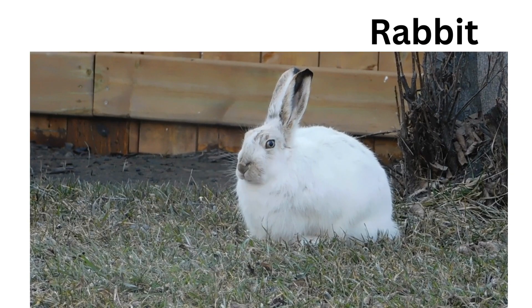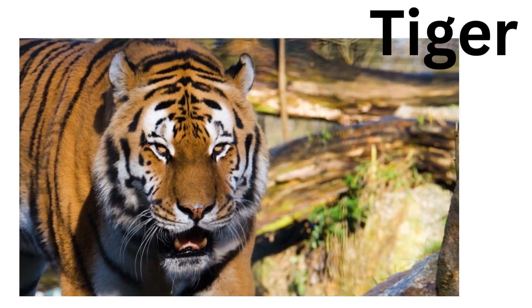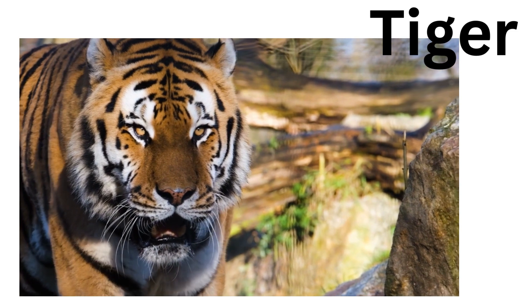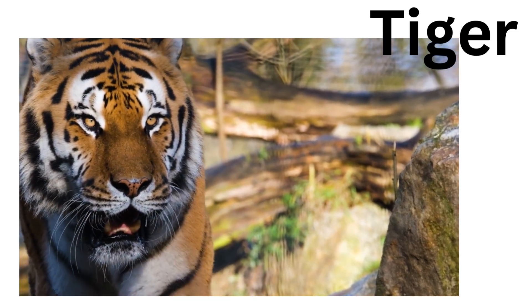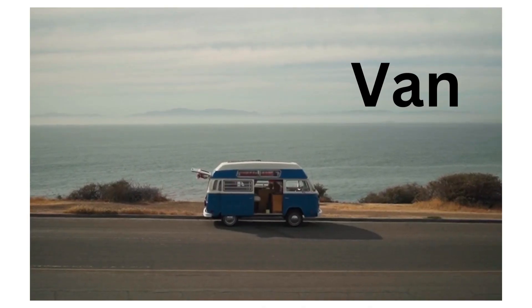R for rabbit. S for ship. T for tiger. U for umbrella. V for van. W for watch.